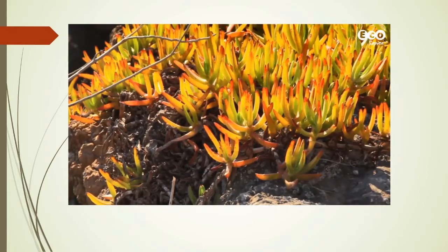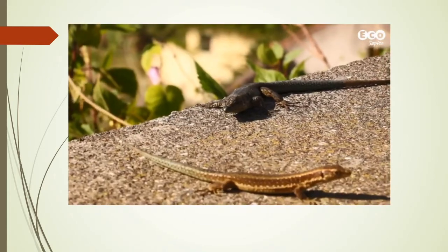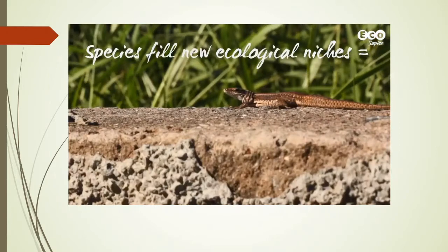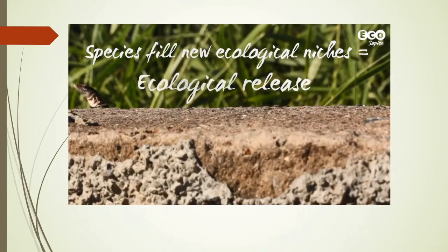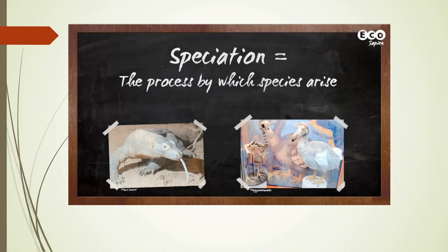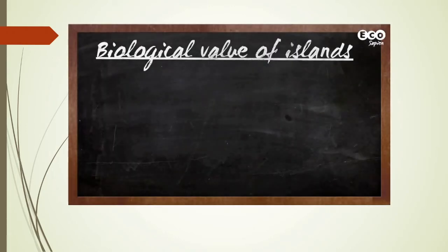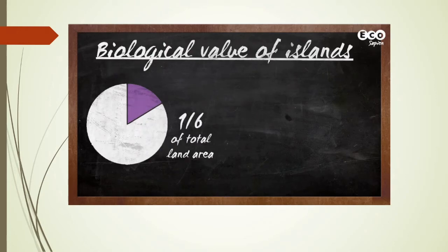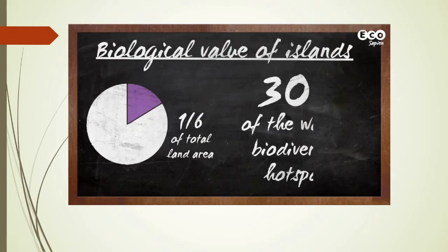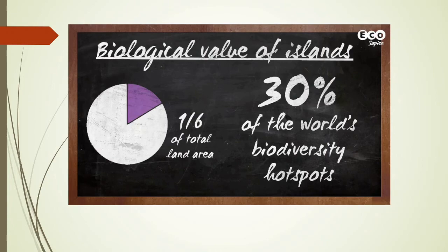But there is an upshot of isolation. Void of traditional predators and competitors that species might have previously evolved with, they take advantage of new niches. As a result, speciation occurs, producing species that are often unique to an island or group of islands. As biodiversity goes, islands are extremely important, making up a sixth of the Earth's total land area. And as a result of their endemism, island ecosystems account for 30% of the world's biodiversity hotspots.